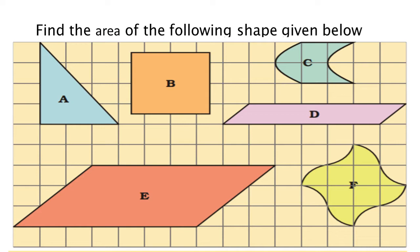What is the area of shape F? Area of shape F is eight square centimeter. You try and solve this — this is for you.